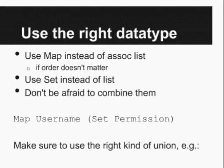In addition to defining new data types, we should take advantage of the types we already have. If you have key-value data, you could store it in an association list — a list of pairs — but that's not as expressive as a Map. A Map guarantees no repeated keys, tells you order doesn't matter, and happens to be much more performant. You can only use these more advanced types where they apply — if you need strict ordering, a Map won't work — but in many use cases order doesn't matter and you can use it.